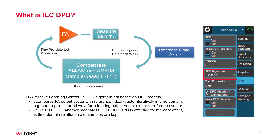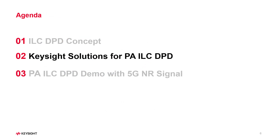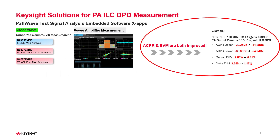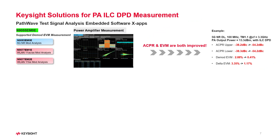In order to pre-distort all significant memory effects, our sample-based approach works iteratively. The ILC-DPD method is available in XApps Power Amplifier measurement with license number N9559-EM0E. Here's an example of a 5G signal which has significant ACPR and EVM improvement with Iterative Learning Control DPD applied in the nonlinear region. Meanwhile, you can get 5G and WLAN demode EVM results in the Power Amplifier measurement.